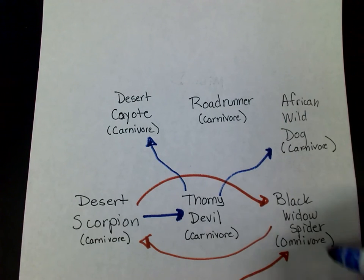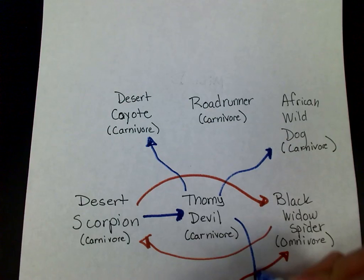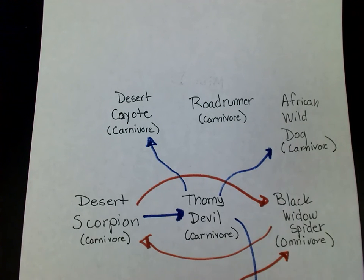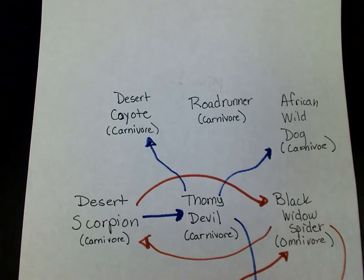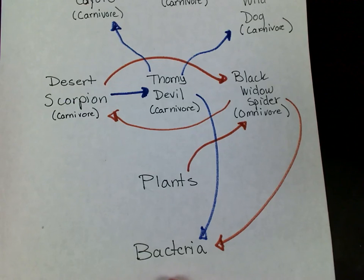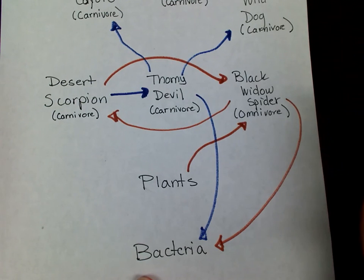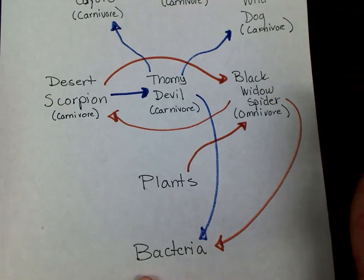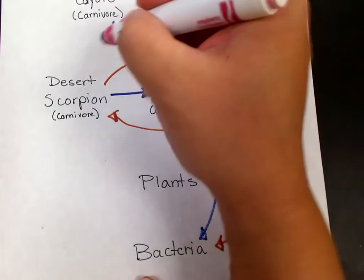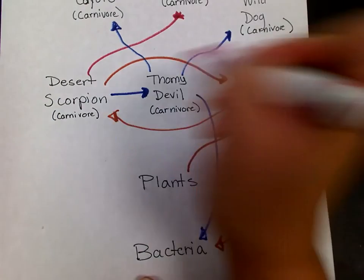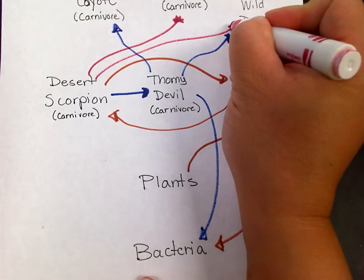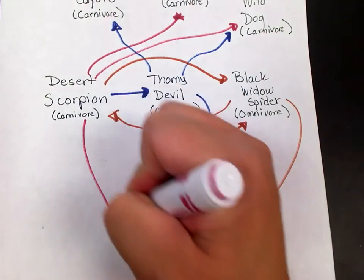You have to also keep in mind — and I forgot this for the black widow spider — you have to draw an arrow to the decomposer, because bacteria is going to decompose all of these organisms when they die. The desert scorpion doesn't eat anything listed here, but it does get eaten by roadrunners and dogs, and then again the arrow goes down to the bacteria.